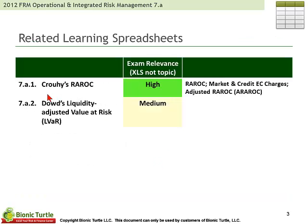For learning spreadsheets, 7A1 is an illustrated RAROC calculation, and 7A2 illustrates Dowd's liquidity-adjusted value at risk, including for expected shortfall.